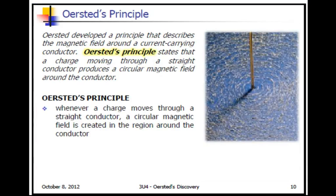And this leads us to Orsted's principle: whenever a charge moves through a straight conductor, a circular magnetic field is created in the region around the conductor.